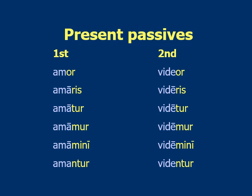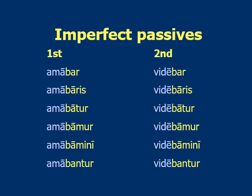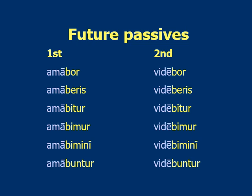To review: present passives — take the stem, add the endings for first and second conjugations. Remember first person the -a drops out; everything else looks the same. Imperfect is the stem plus -ba- plus the endings; first and second conjugation work exactly the same way. Translation: 'was loved,' 'was seen,' 'was heard,' whatever the verb means — just put 'was' or 'were' in front of it. Future: stem, first and second conjugation, add -bo-, -be-, -bi-, or -bu- depending on which person, then the endings. Translation: 'I will be loved,' 'you will be loved,' 'he/she/it will be loved,' etc.